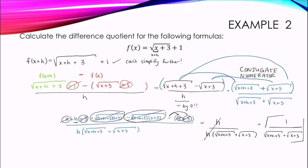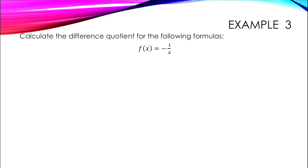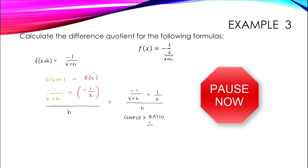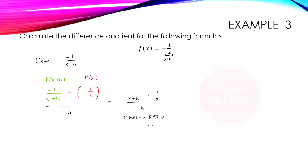One more example. For our third example, we are calculating the difference quotient for f of x equals negative 1 over x. First, we write out the formula for f of x plus h. You should get negative 1 over x plus h. Nothing to simplify there, or with f of x, so let's write out the difference quotient expression. We get negative 1 over x plus h minus negative 1 over x for our numerator, all over h. Did you get that the final difference quotient formula is 1 over x times x plus h? If so, great job — you're done with this problem.